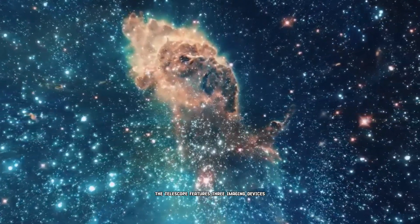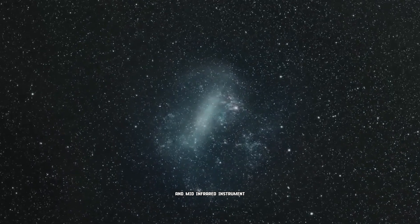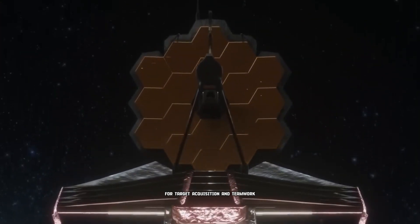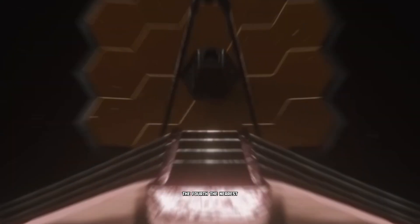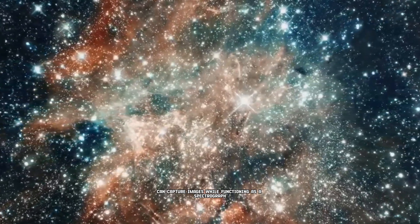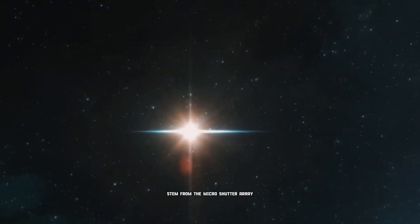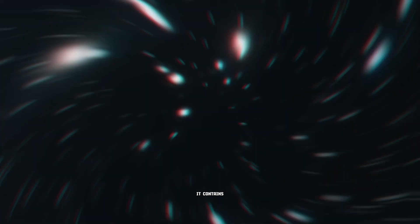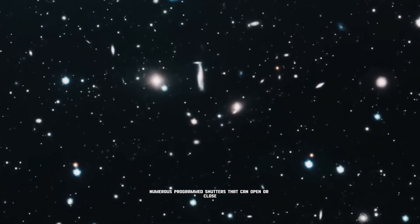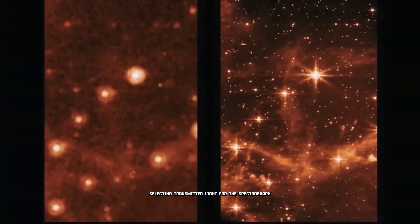The telescope features three imaging devices: the near-infrared camera, near-infrared spectrograph, and mid-infrared instrument for target acquisition and teamwork. The fourth, the nearest, can capture images while functioning as a spectrograph. Dark spots in some data stem from the micro-shutter array used in the near-spec. It contains numerous programmed shutters that can open or close, selecting transmitted light for the spectrograph.